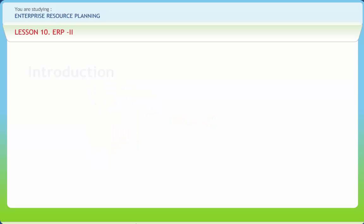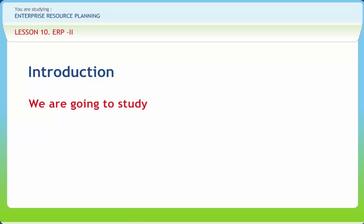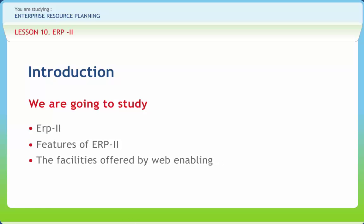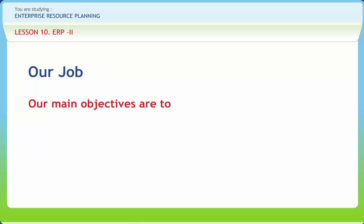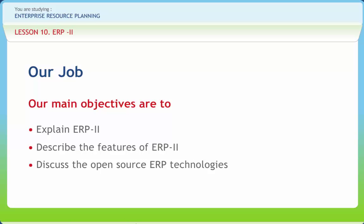ERP-2: We all know the ERP research interest was fueled by unsuccessful ERP implementation projects and has only recently been consolidated into a strategic and managerial perspective on enterprise systems management. In this lesson, we will study ERP-2, features of ERP-2, and the facilities offered by Web Enabling. After going through this presentation, you should be able to explain ERP-2, describe added features of ERP-2, discuss open source ERP technologies, and explain the facilities offered by Web Enabling.